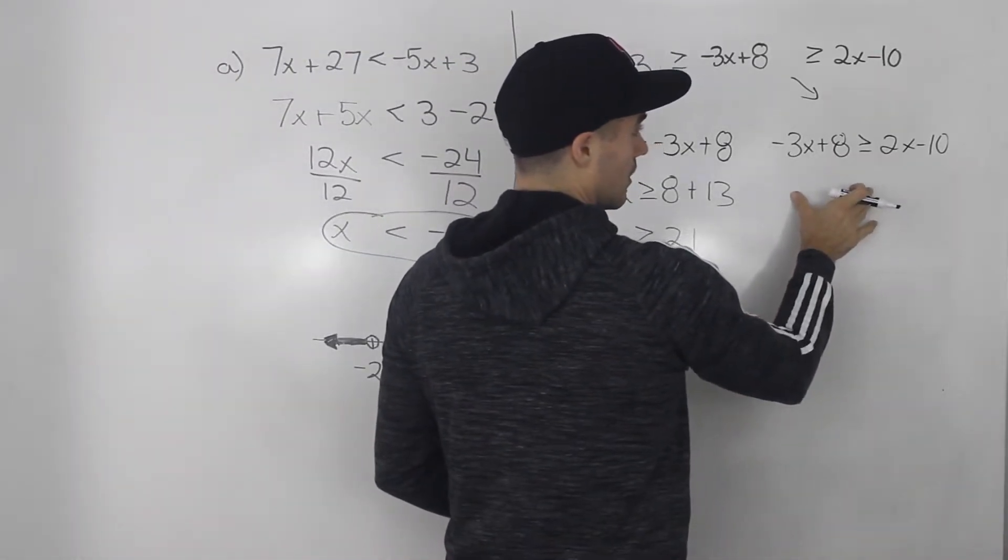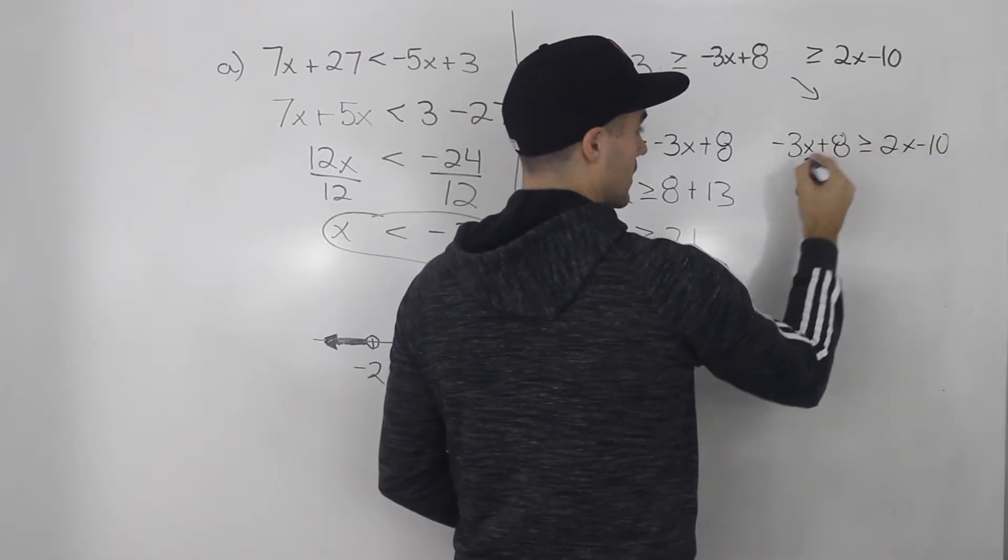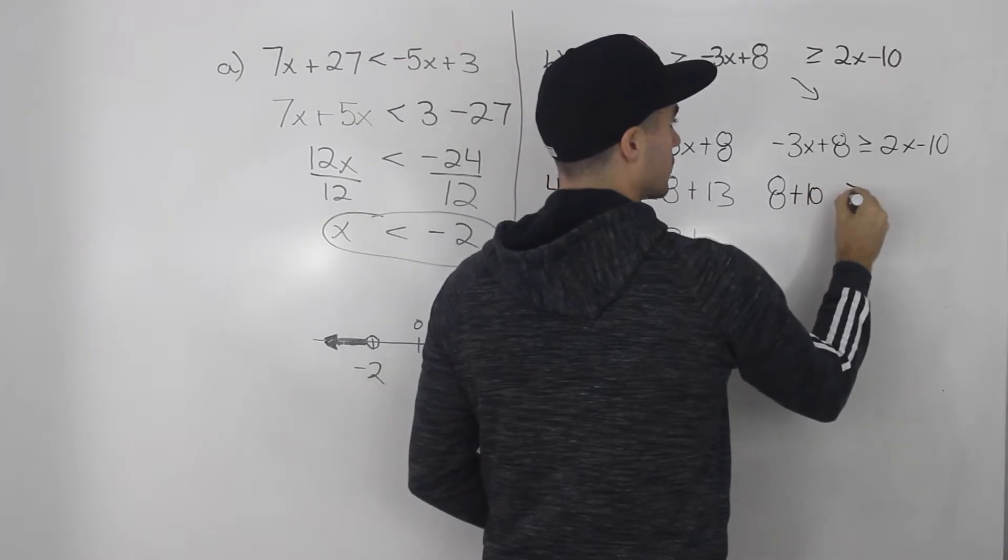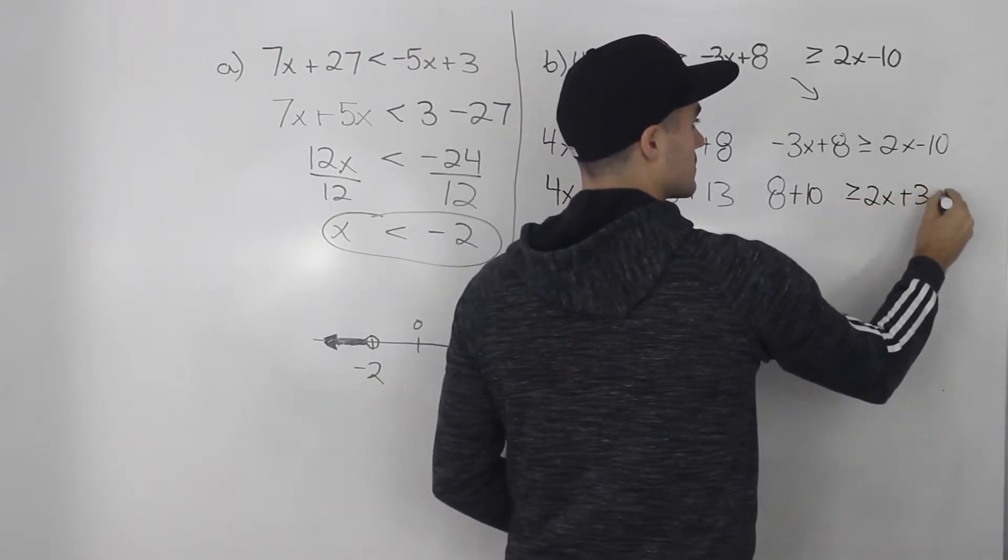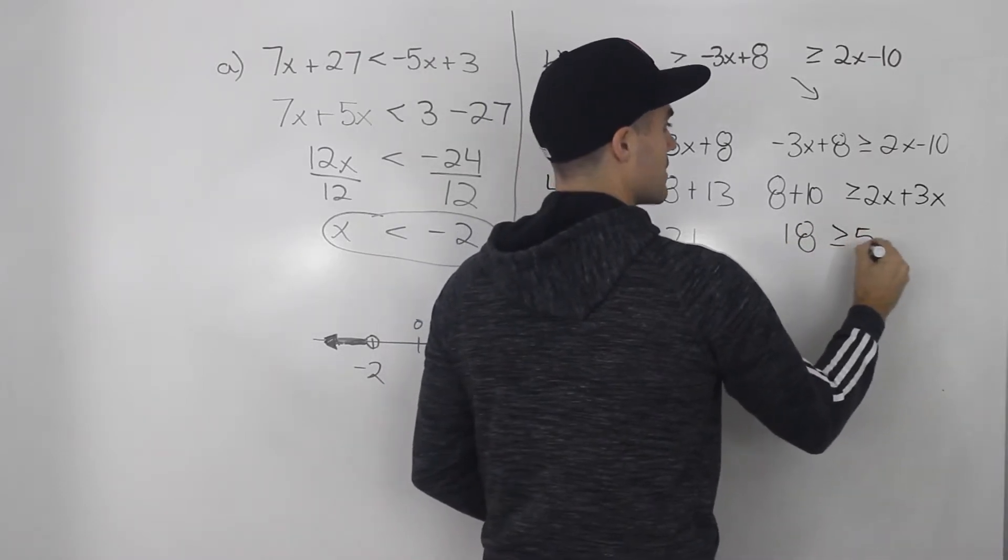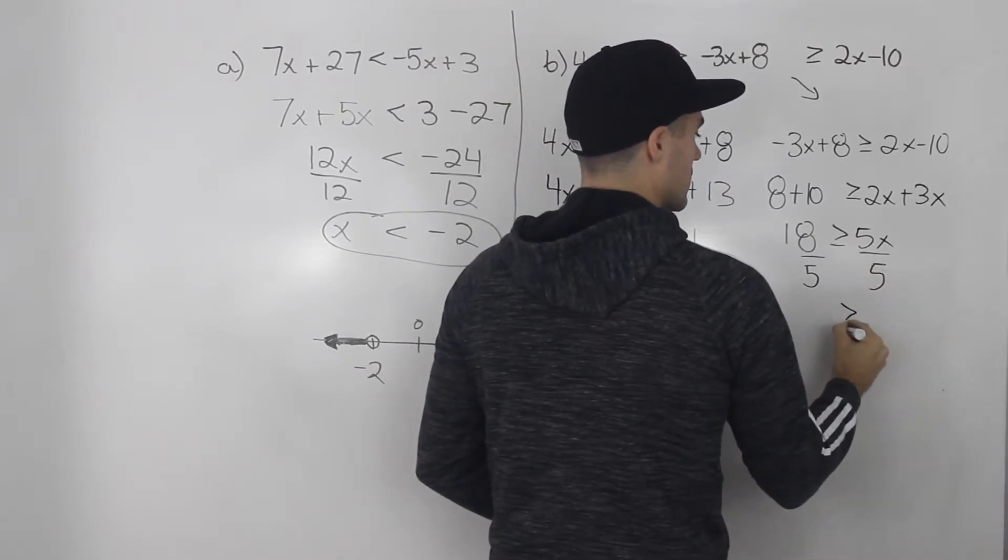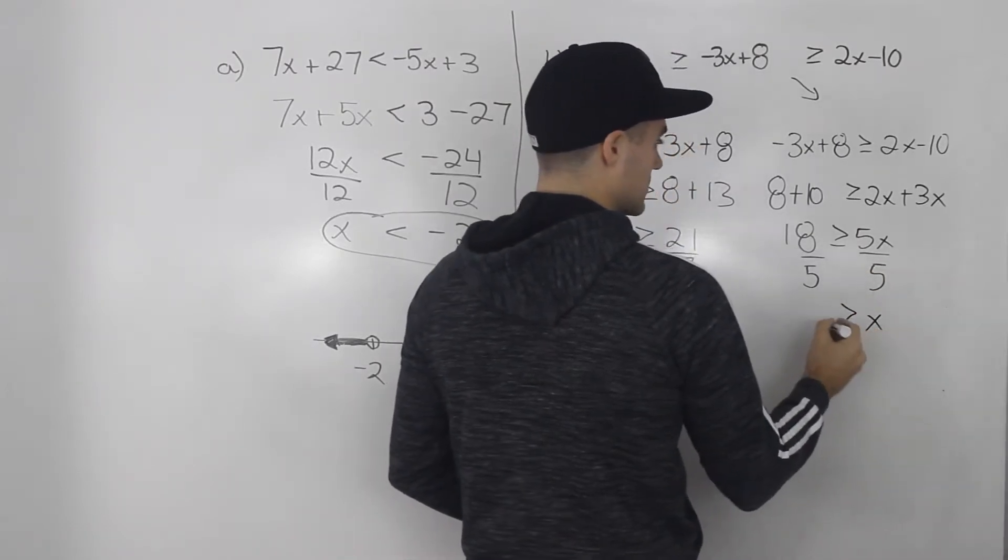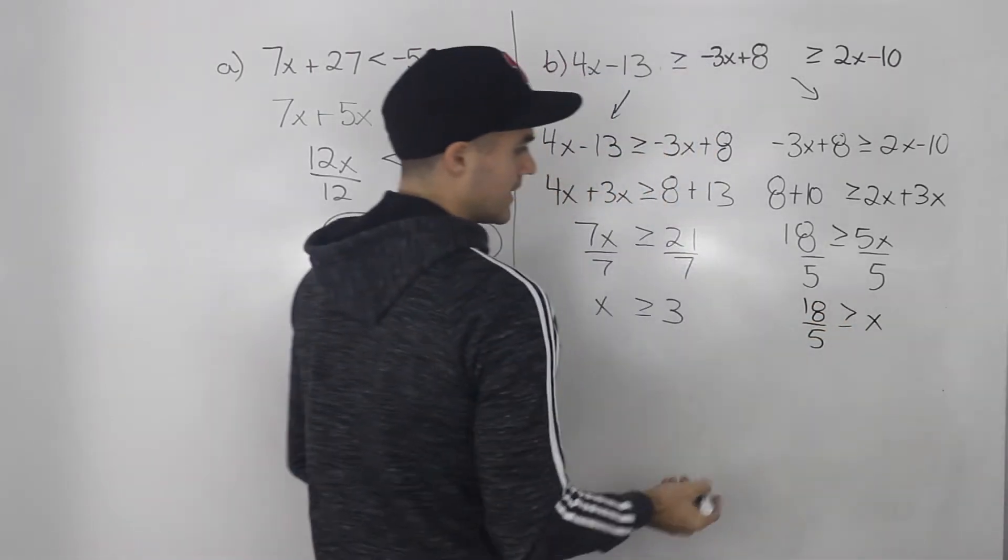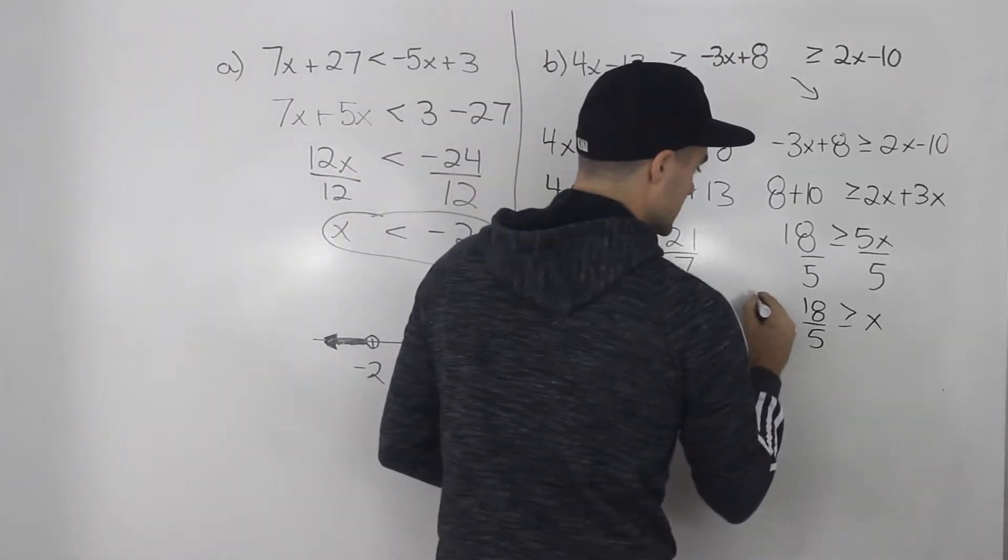And then here, I'll bring this negative 3x over to the right side, bring this negative 10 over to the left side. So I'll have 8 plus 10 greater than or equal to 2x plus 3x. So 18 is greater than or equal to 5x. Divide both sides by 5. So that means x has to be less than or equal to 18 over 5. And 18 over 5 in decimals, that is 3.6.